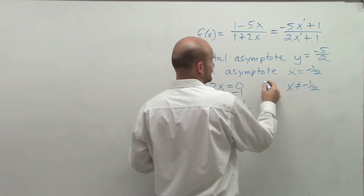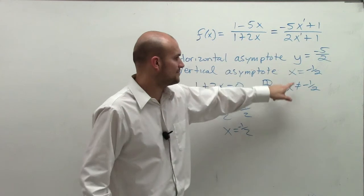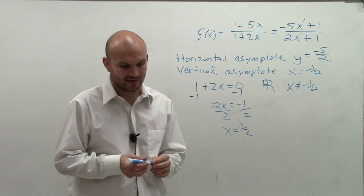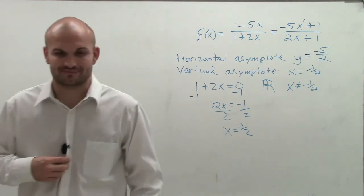So your vertical asymptote is x equals negative 1 half. However, the domain is going to be all real numbers where x cannot equal negative 1 half. So there you go. Thanks again for watching. Hope you enjoyed. Bye.